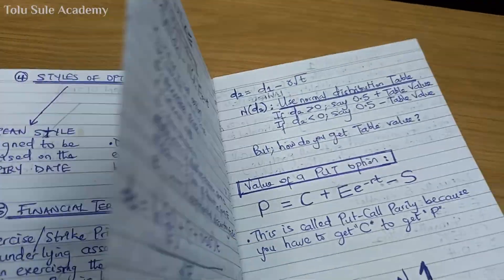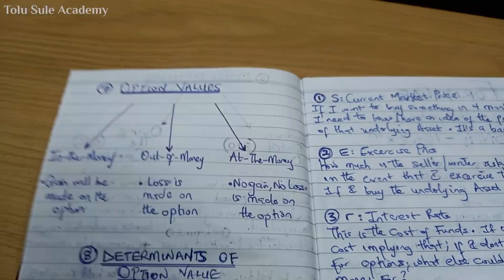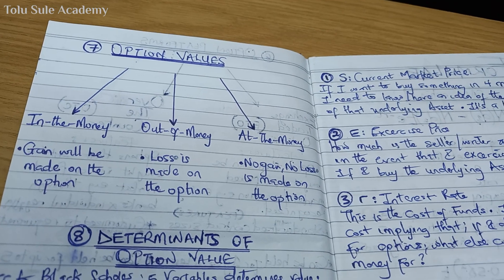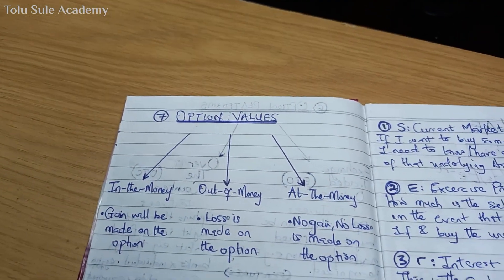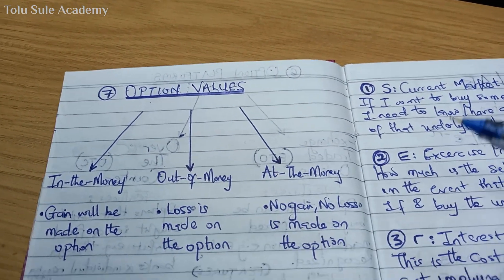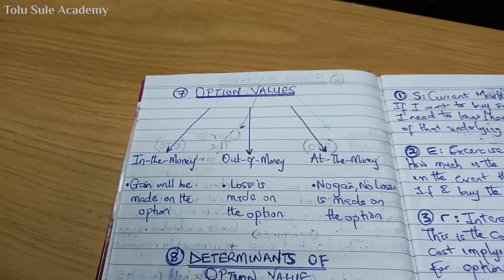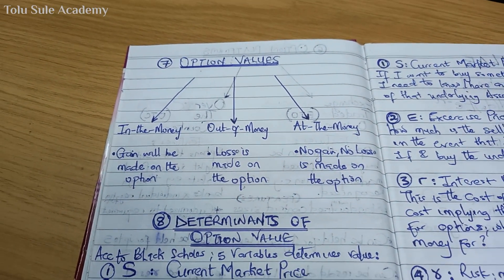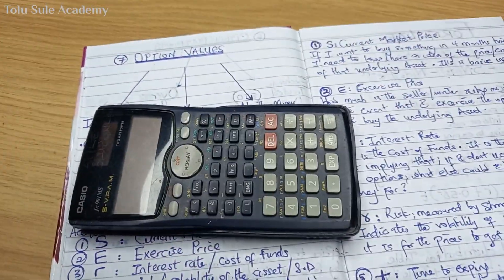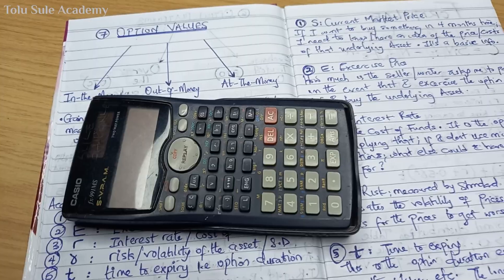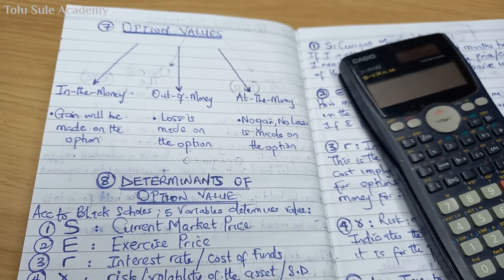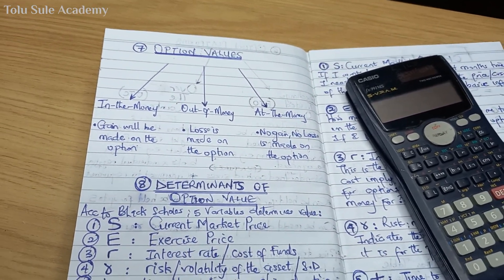Now for option values, which are divided into three: in the money, out of the money, and at the money. When an option is in the money, it means a gain will be made — the option is worth it. Using our calculator example: we agreed on 2,000 naira, but by 31st December the calculator is selling for 2,500 — that is an in-the-money option, and you would be glad you locked in that price.